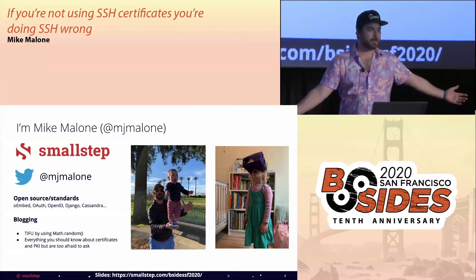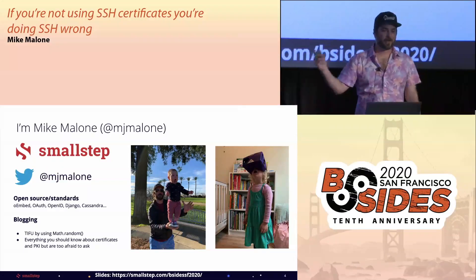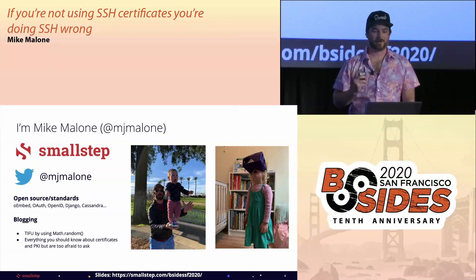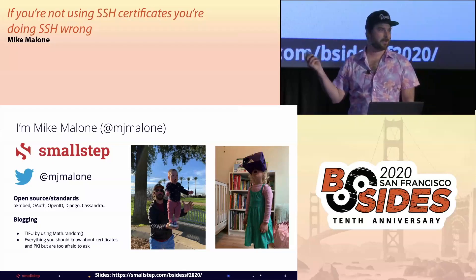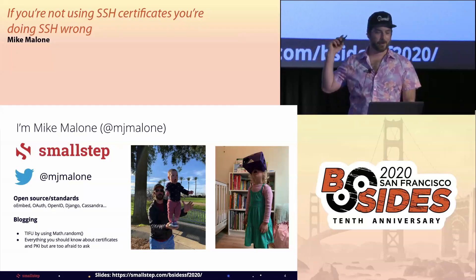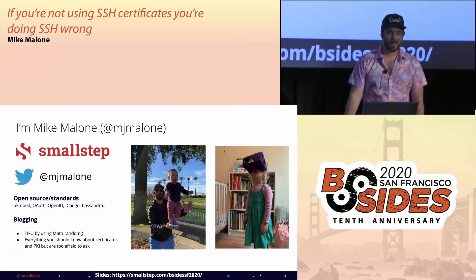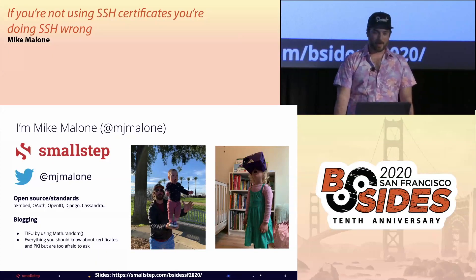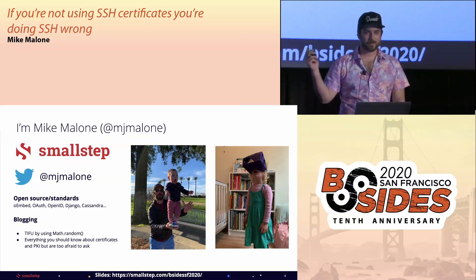Let me introduce myself, your narrator. My name is Mike Malone. I'm a software engineer. My happy place is distributed systems architecture. I've made some open source and open standards contributions over the years. These days I spend most of my time wrangling kids and running my company Smallstep, which provides solutions for secure and distributed systems.